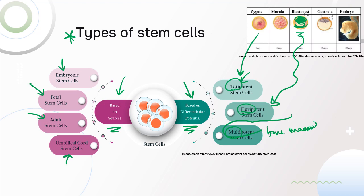There is one more type of differentiation potential: unipotent. Unipotent stem cells can differentiate into only one kind of cell. We have special cells called spermatocytes — they are stem cells that can become sperm cells and nothing else. So spermatocytes are unipotent; they can only become sperm cells.